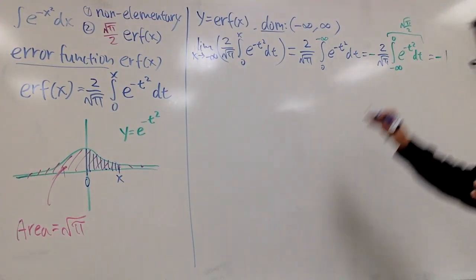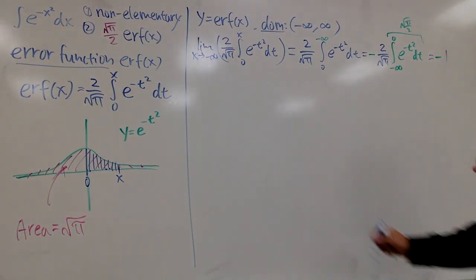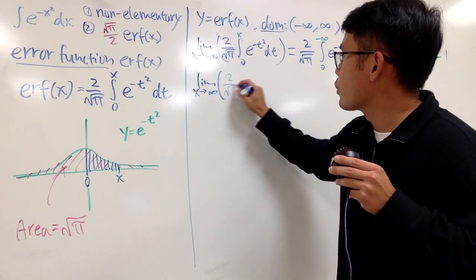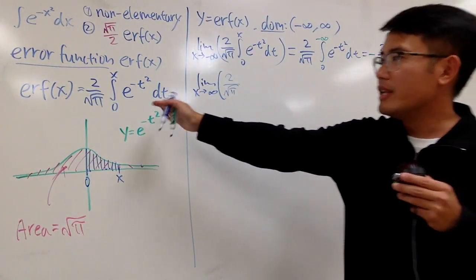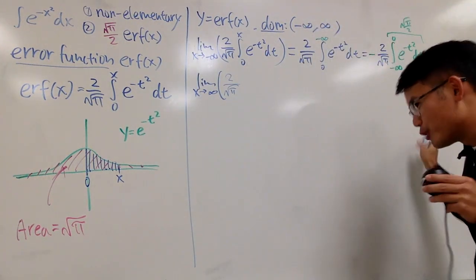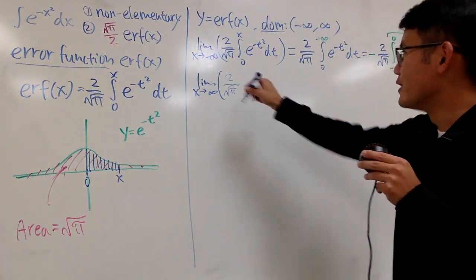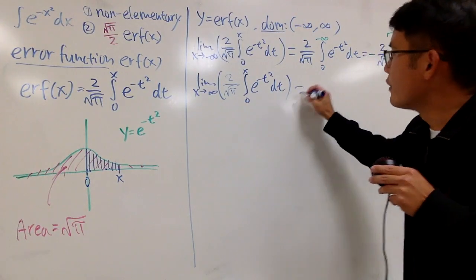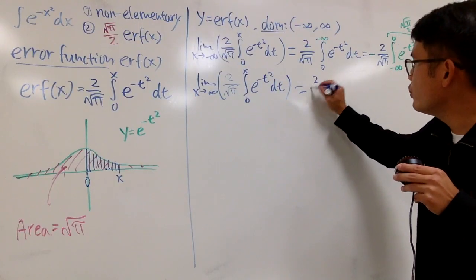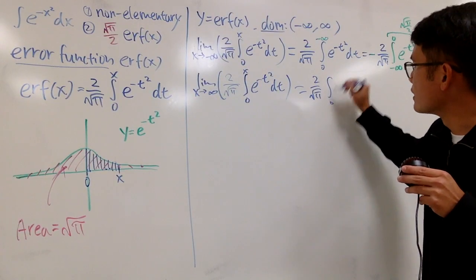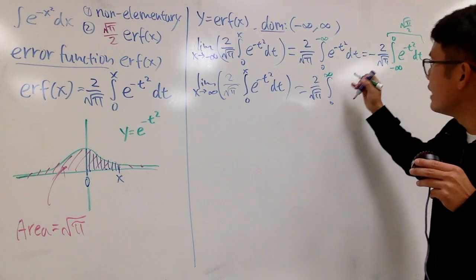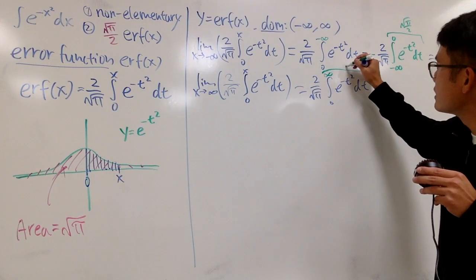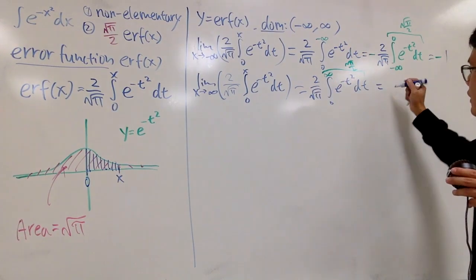And if you take the limit as x goes to positive infinity, you get 2 over square root of pi times the integral from 0 to infinity of e to the negative t squared dt. This right here is just square root of pi over 2, which gives you 1. So you have two horizontal asymptotes: y equals negative 1 and y equals positive 1.